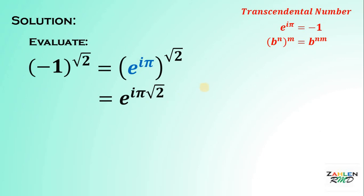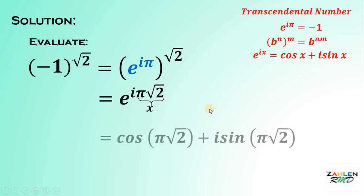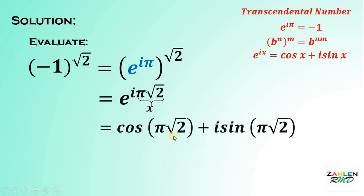At this point, we will use another identity. If we have E raised to IX, it is equal to cosine X plus I sine of X. Now, at this point, let pi square root of 2 be equal to X. Therefore, we have cosine of pi square root of 2 plus I sine of pi square root of 2.